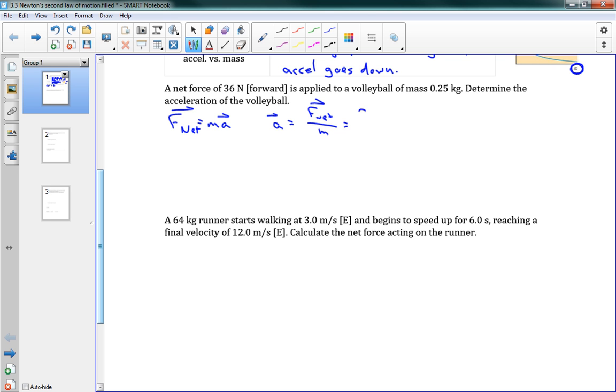Good. So A is equal to F net over M. We've got our 36 newtons forward divided by 0.25 kilograms. And this gives us 144 meters per second squared. Or if we want to use the right number of digits, 140. We were given two digits in the first problem. Again, you can see where everything is coming from here. You can see now that newtons divided by kilograms gives us meters per second squared. Because our units here are 1 newton equals 1 kilogram meter per second squared. Good.